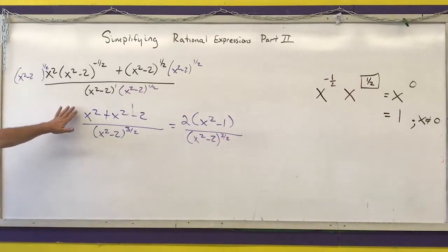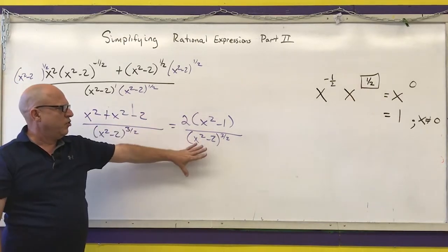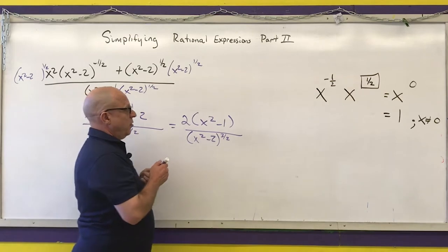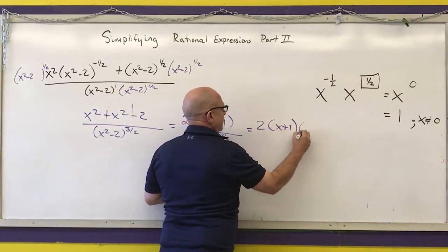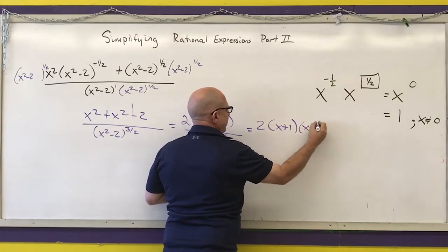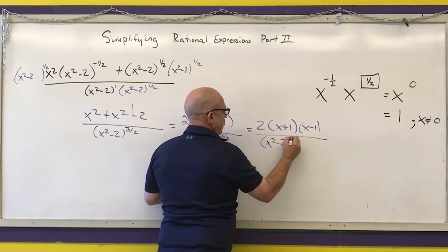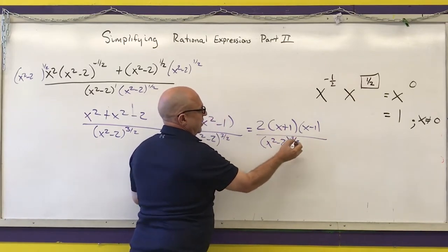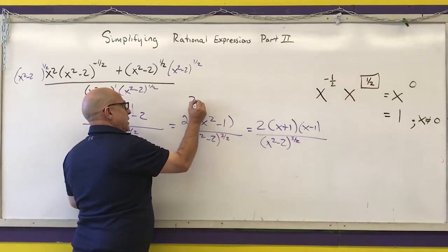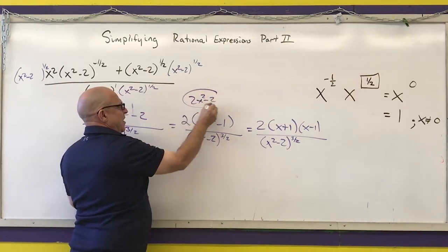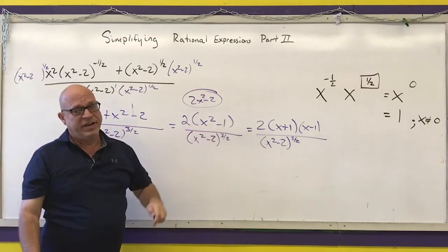You may have written just 2x squared minus 2, but I would prefer the factored form. Remember to read your directions — it may ask you to write your final answers in completely factored form. So 2(x squared minus 1) over (x squared minus 2) to the three-halves would be the completely factored form. If it doesn't specify, you could write 2x squared minus 2 over (x squared minus 2) to the three-halves power.